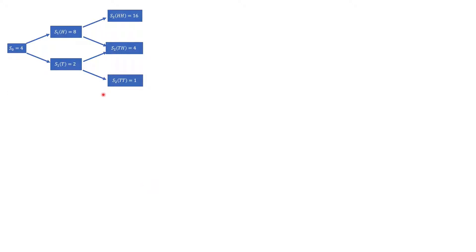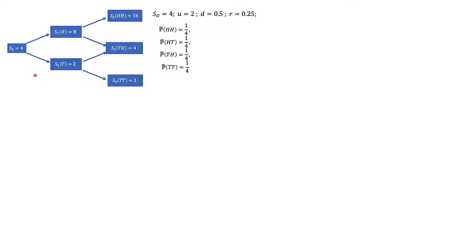As a reminder, we have a binomial model — specifically a two-period binomial model. This tree represents the asset that the investor can invest in. You can see this tree is consistent with these parameters, and given these parameters we can calculate the risk-neutral probabilities, which are given here.